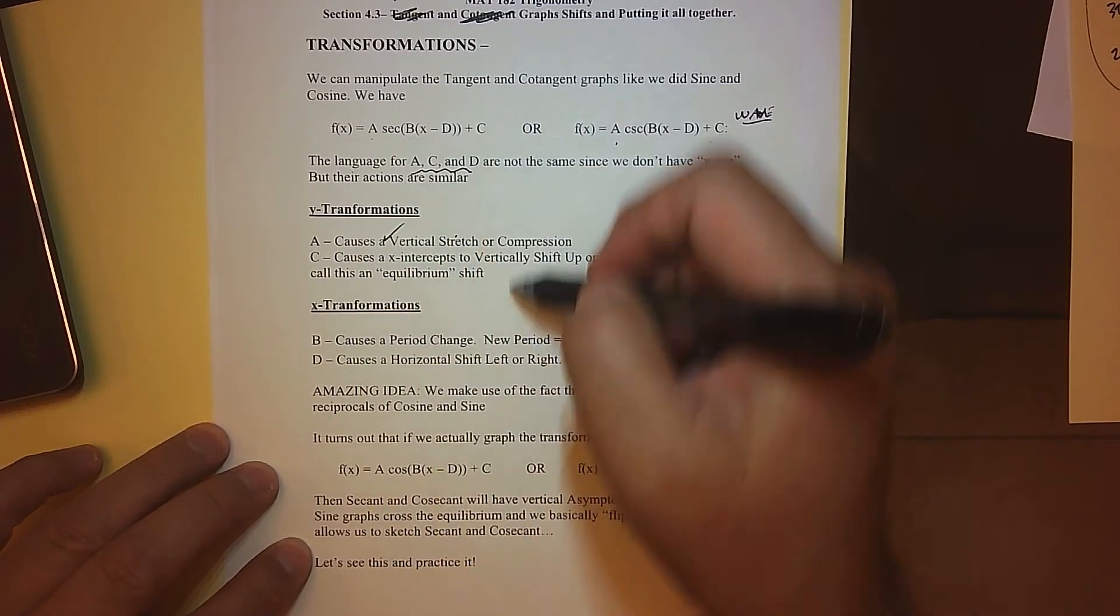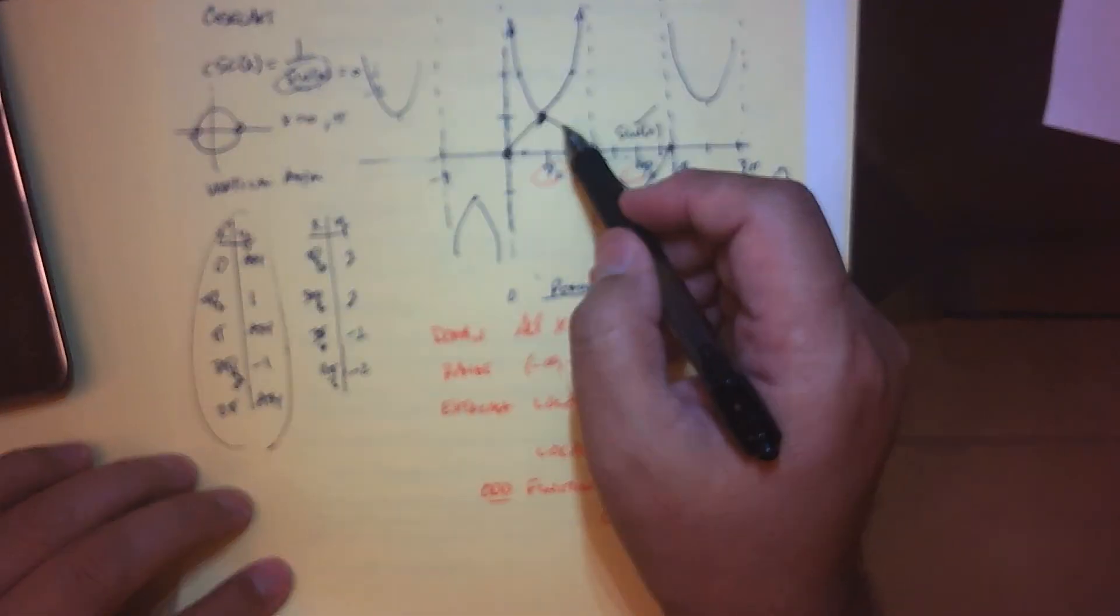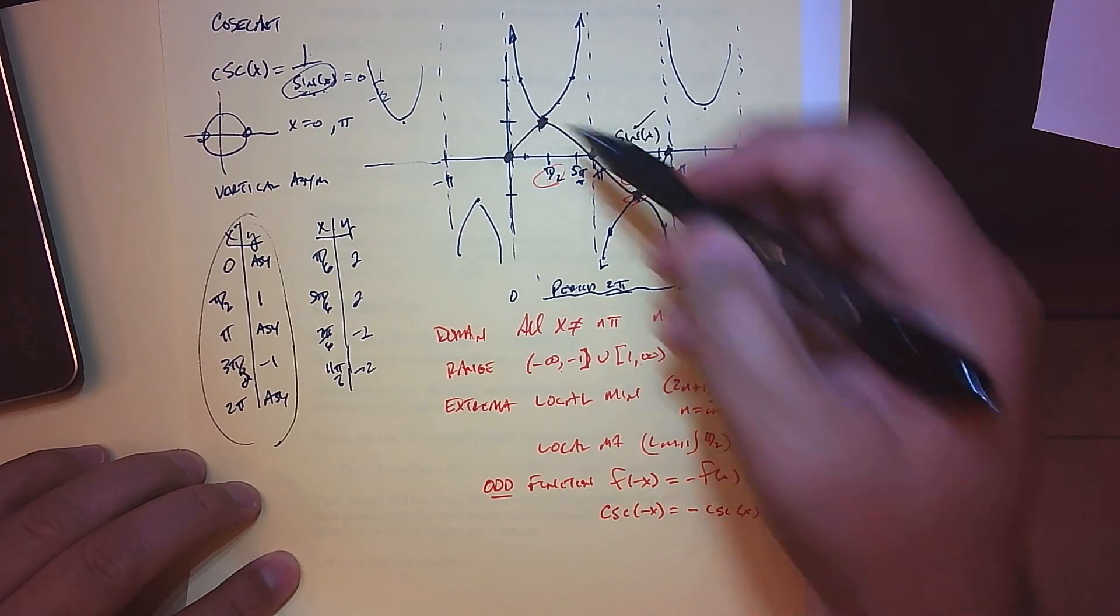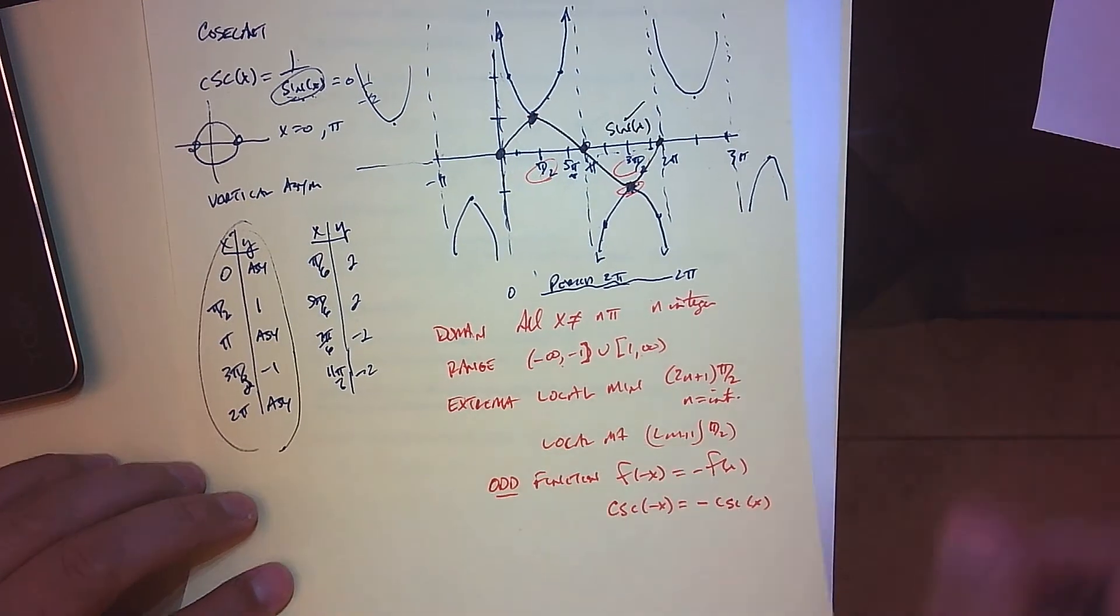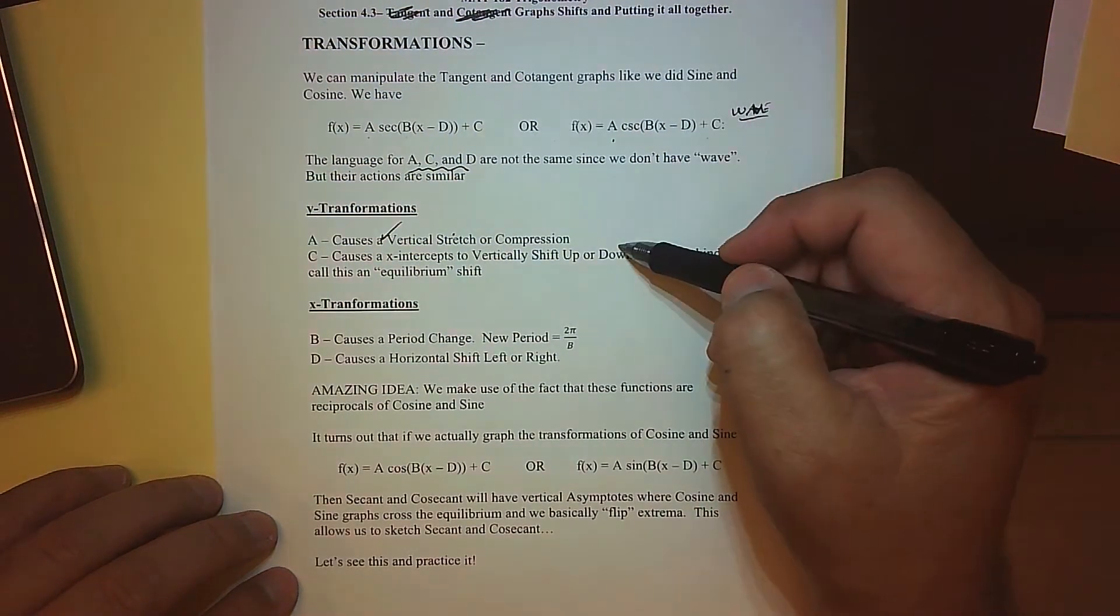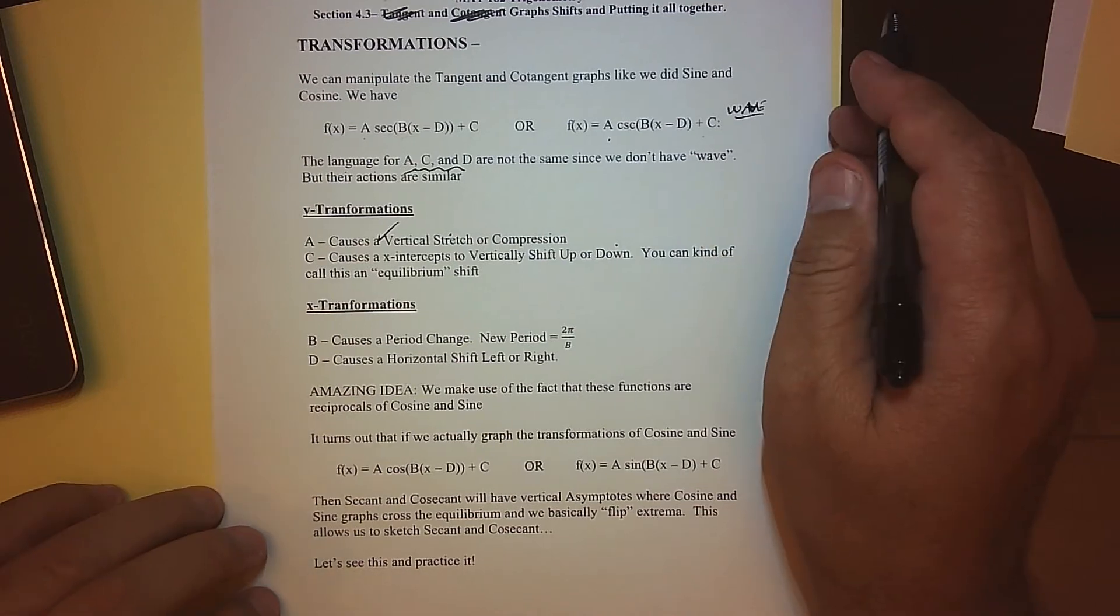The c, again, what that's going to cause us to do is shift up and down. So we already have a problem with x-intercepts on a normal graph, but if I shift this up high enough or shift it down low enough, we're actually going to create some x-intercepts by creating a shift up or down.